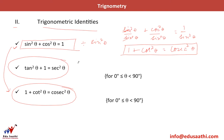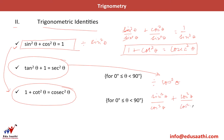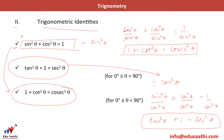For the third identity, divide the first equation sin²θ + cos²θ = 1 by cos²θ. You get sin²θ/cos²θ + 1 = 1/cos²θ, which gives tan²θ + 1 = sec²θ, since sin/cos is tan and 1/cos is secant. So all you need to remember is this one equation, and you can derive the rest.